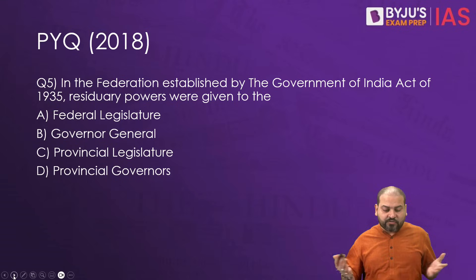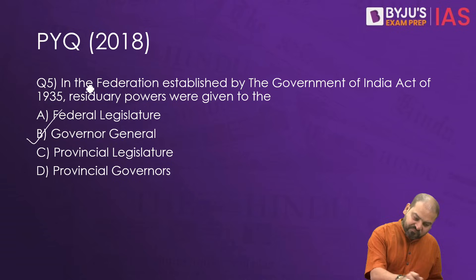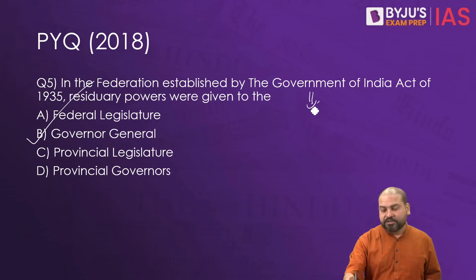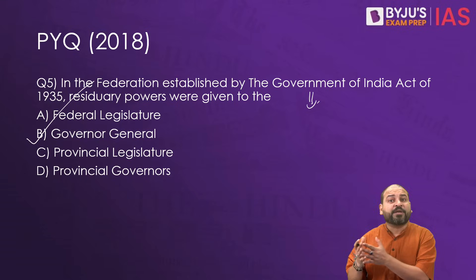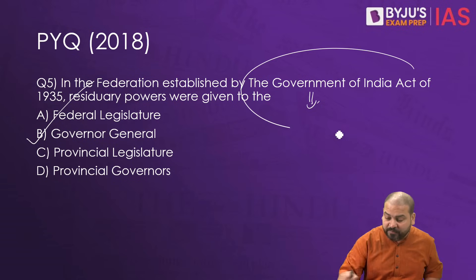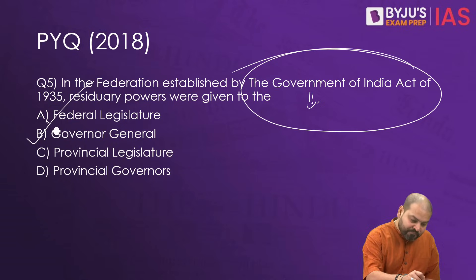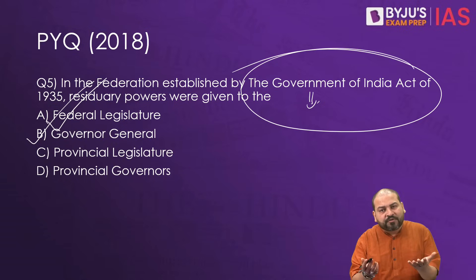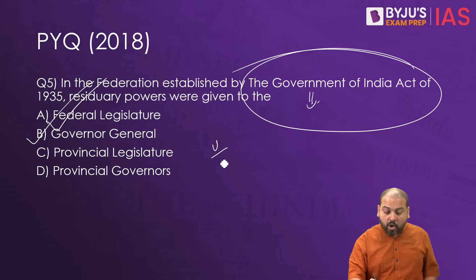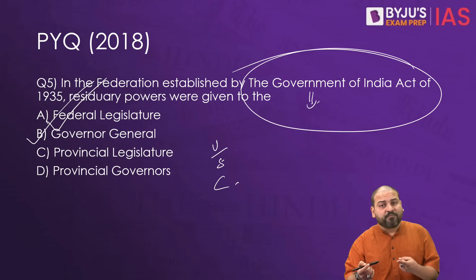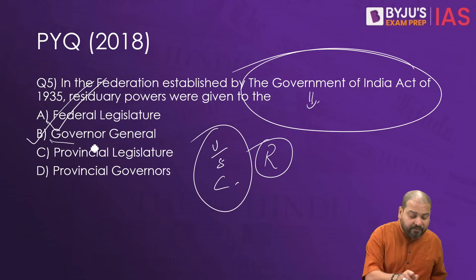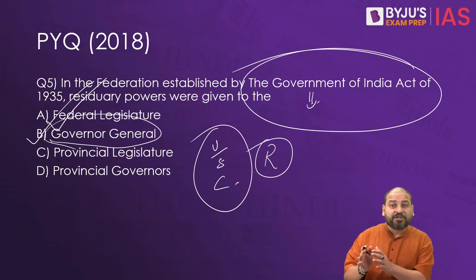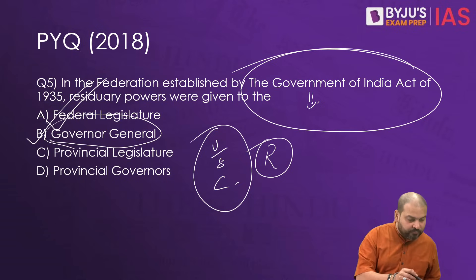A PYQ from 2018 — a factual question: in the Federation established by the Government of India Act 1935, residuary powers were given to whom? The answer is D — Governor General. You all must have studied the GI Act 1935, a very important document, and even after independence it became important because half of our constitution has been borrowed from this act. Residuary powers are those not mentioned in the union list, state list, or concurrent list. Giving residuary powers to the Governor General clearly indicates they wanted the center to be much more powerful.